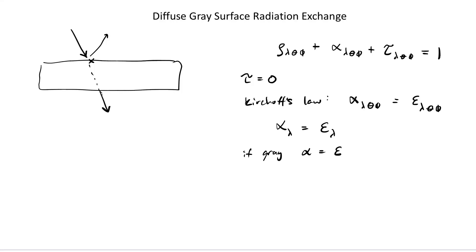Let's introduce this idea for diffuse gray surface radiation exchange. We often talk about a concept called radiosity. Radiosity is given the symbol capital J, associated with some surface i — so J_i.